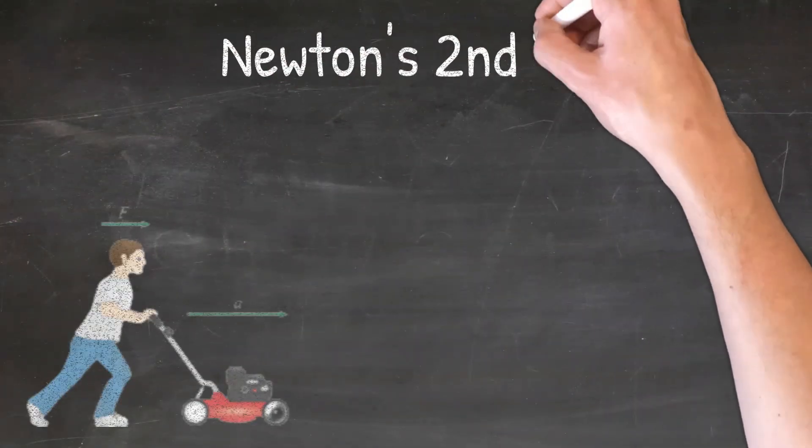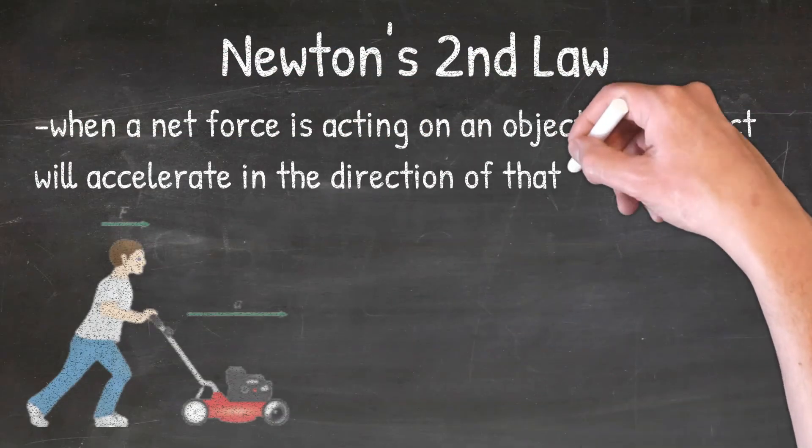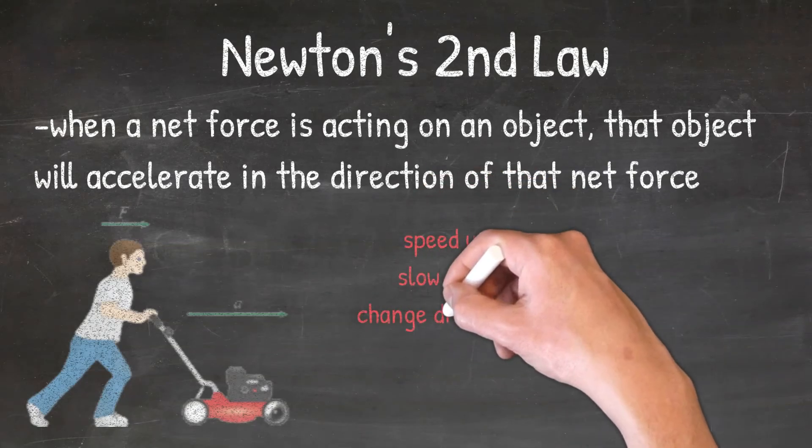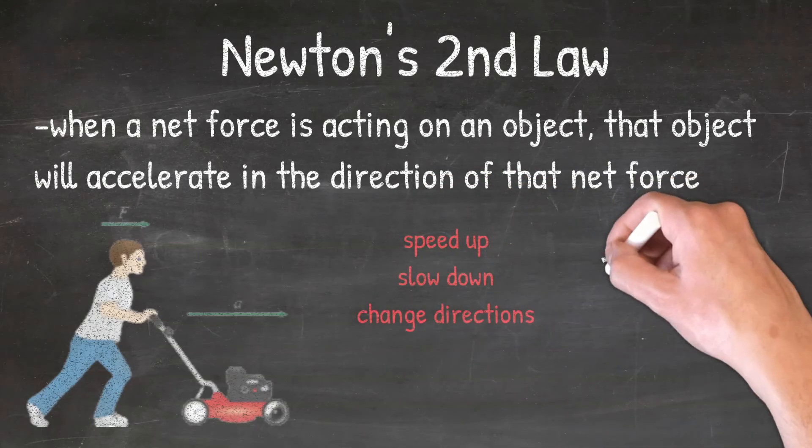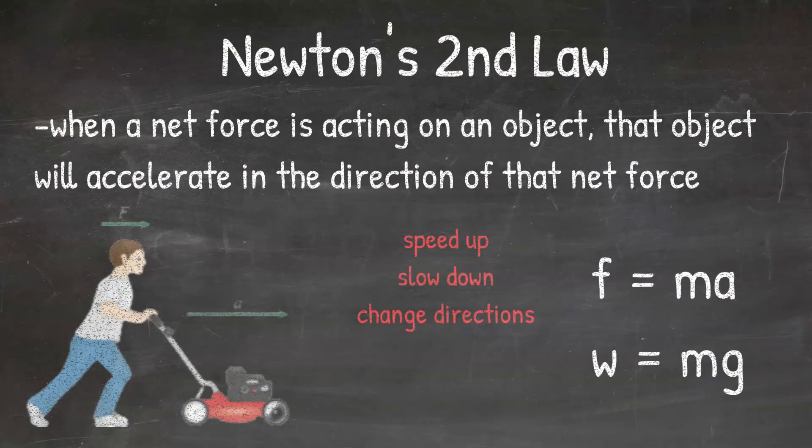To summarize, Newton's second law tells us that if a net force is applied to an object, that object is going to accelerate, meaning it will speed up, slow down, or change directions. We can solve for force using the formula F equals MA, and we can solve for weight using the formula W equals MG. We will cover solving these formulas for Newton's second law of motion in another video.